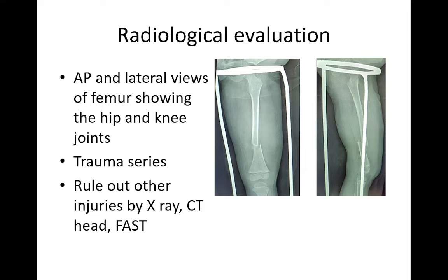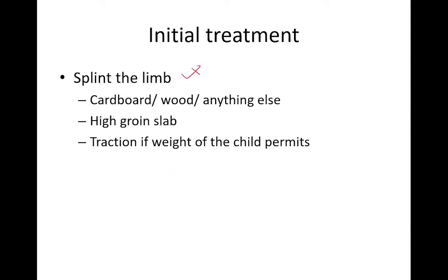Radiological evaluation for pediatric shaft of femur fractures includes AP and lateral views of the femur showing both the hip and knee joint. An additional trauma series should be performed including x-ray of the cervical spine, chest x-ray, and pelvis x-ray to rule out major injuries. A CT scan of the head and a FAST scan can also be performed to rule out head and abdominal injuries.